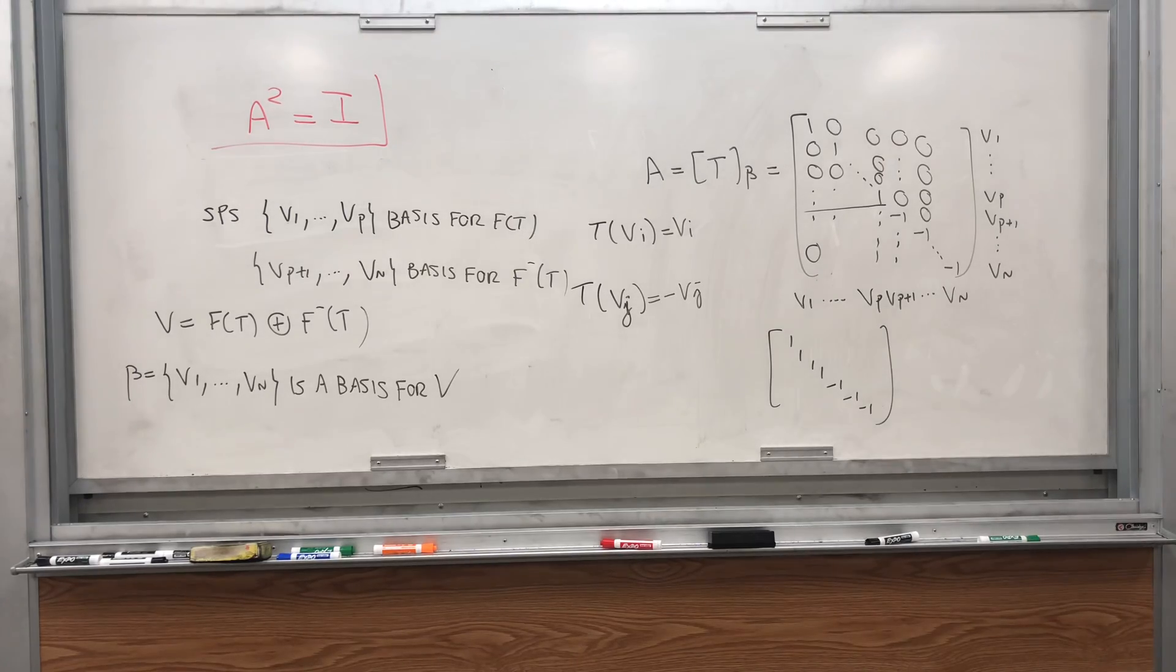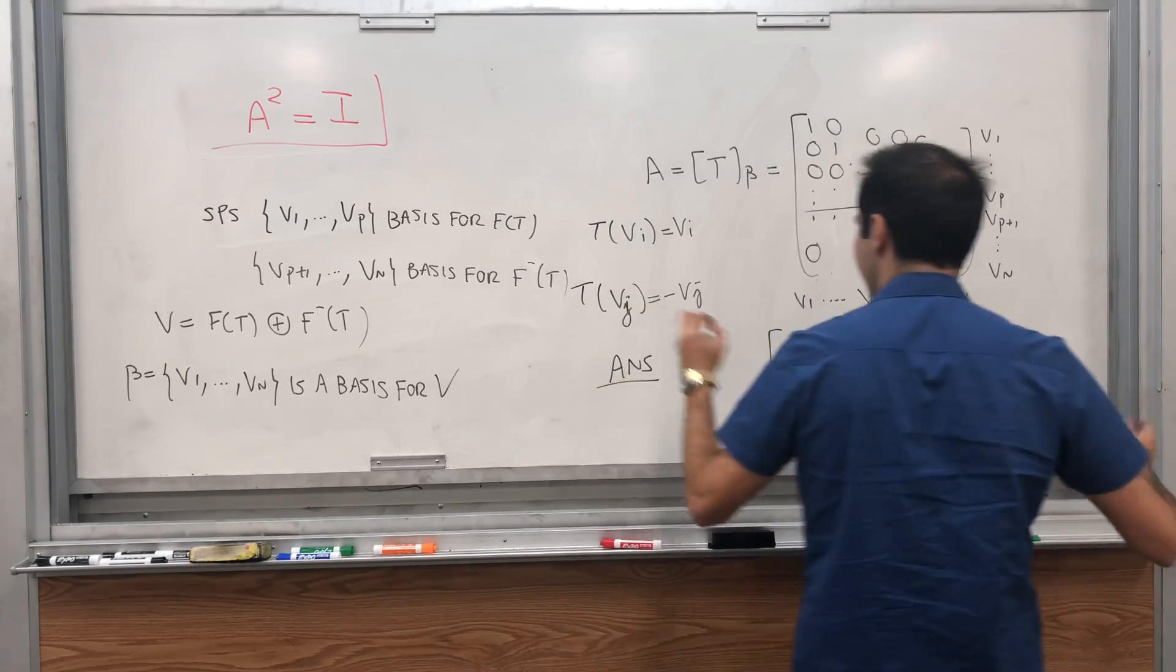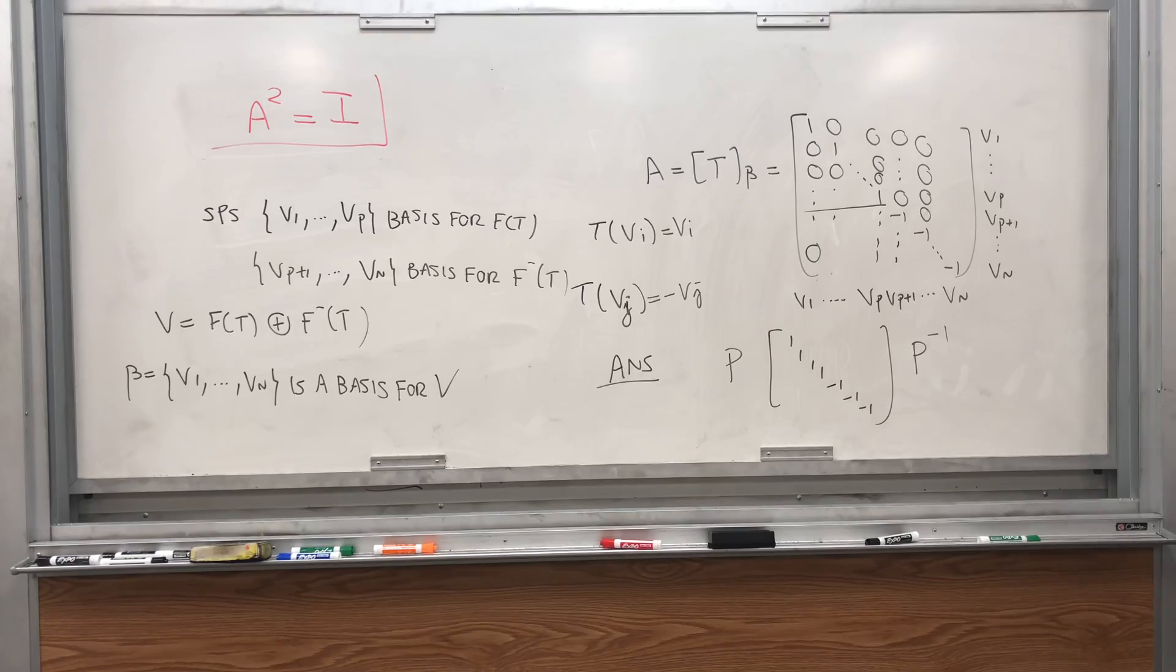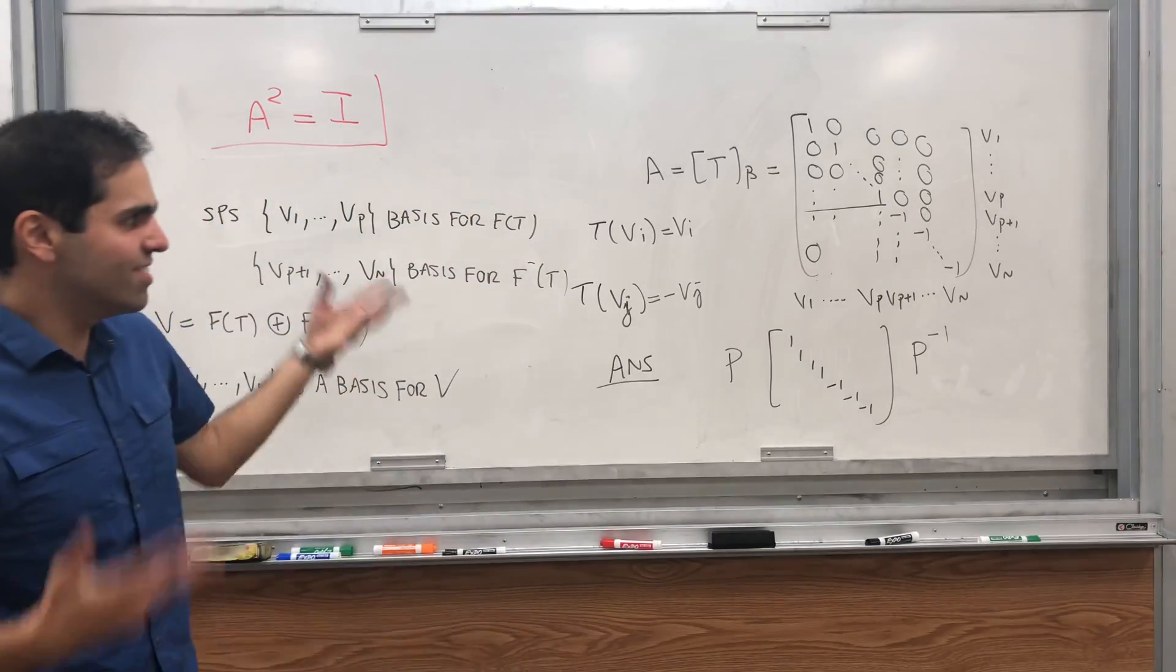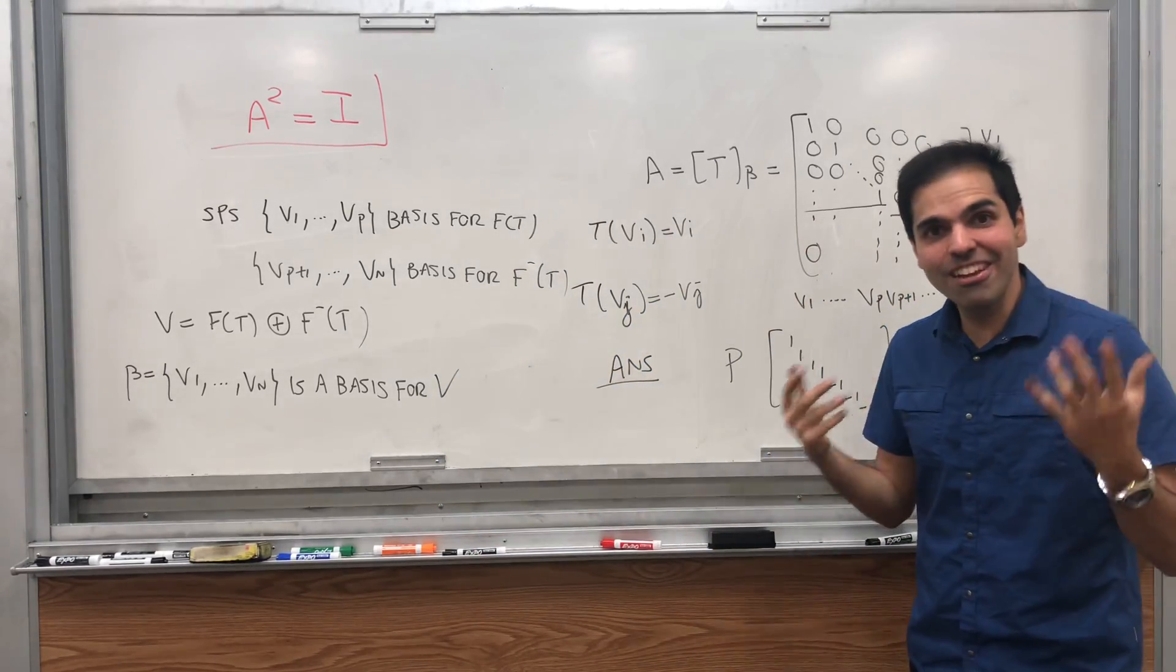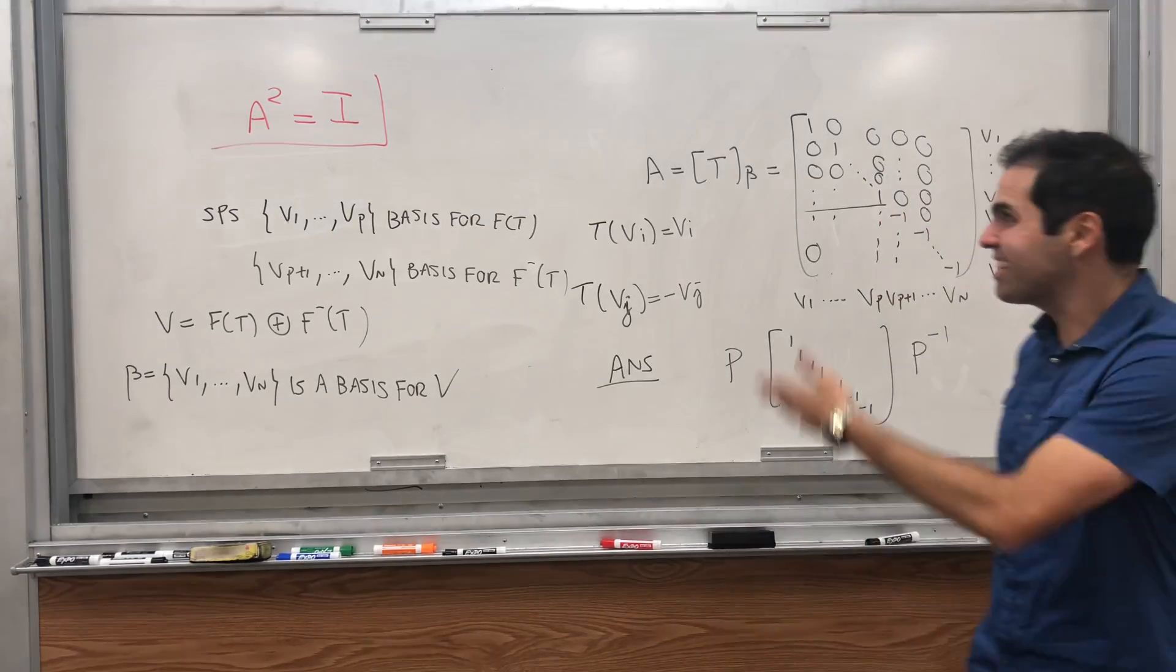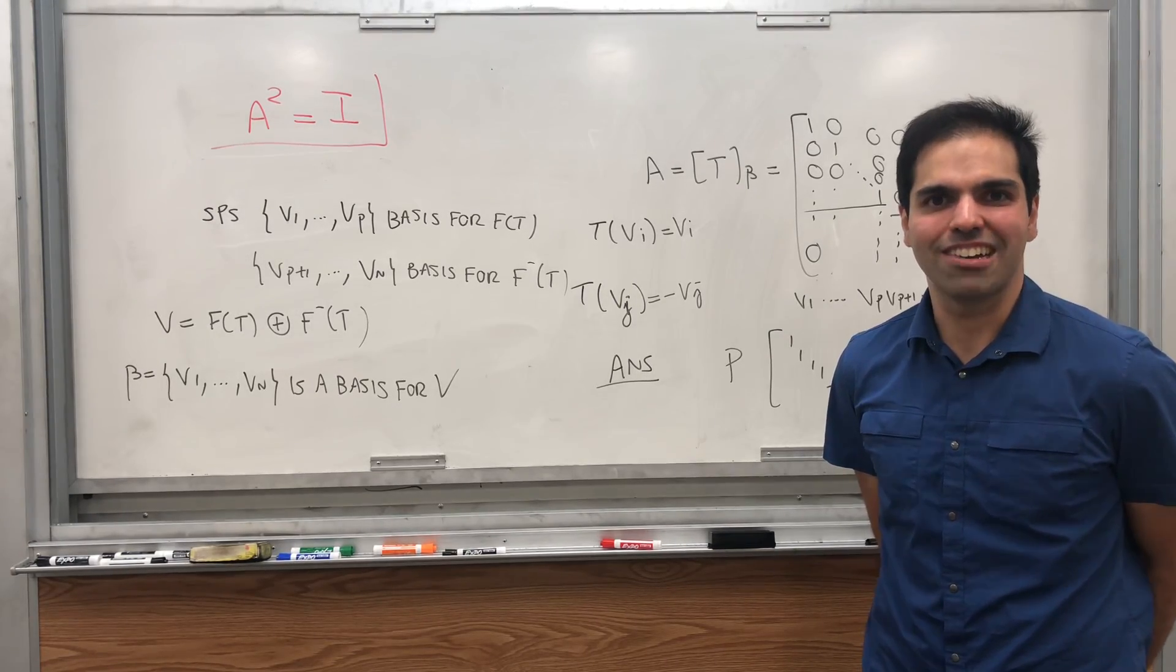So those are, up to change of basis, all the matrices whose square is the identity. But in general the answer is just with conjugation, so if you change basis you get any P, this matrix P inverse, and that gives you all your matrices. And you see from this geometric characterization we get this algebraic characterization, and I really think this is the essence of linear algebra, how to solve algebraic problems using geometry. All right, I hope you liked this little excursion in linear algebra. If you want to see more math, please make sure to subscribe to my channel. Thank you very much.